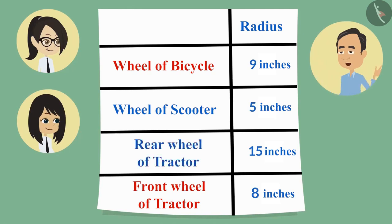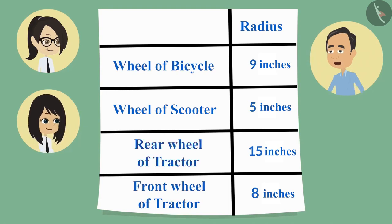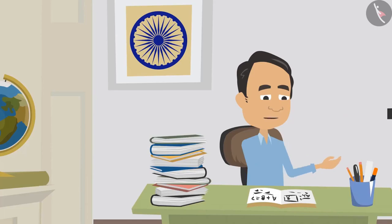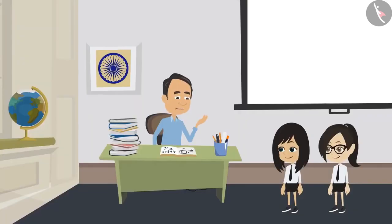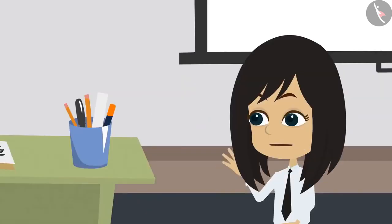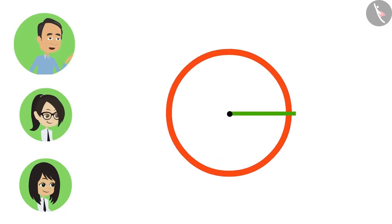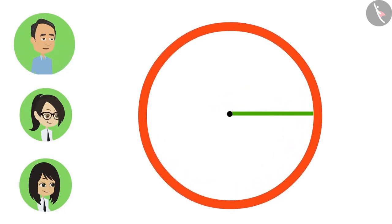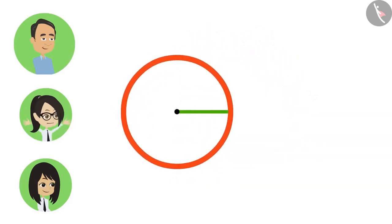The teacher points out that you can tell which circle is bigger just by looking at the radius measurement. He demonstrates: increasing the radius makes the circle larger, and decreasing the radius makes the circle smaller. Larger radius means a larger circle; smaller radius means a smaller circle. A student then correctly deduces that the bicycle wheel is bigger than the front tractor wheel because its radius is 9 inches, which is more than the tractor's front wheel radius of 8 inches.